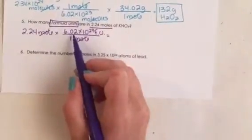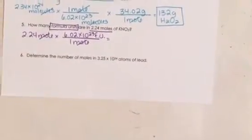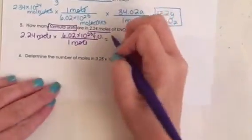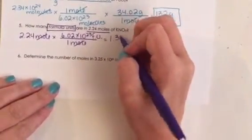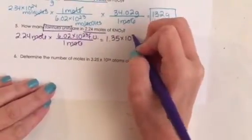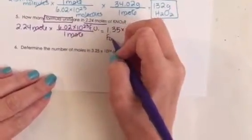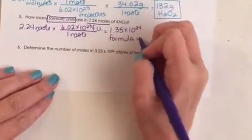We just multiply 2.24 by 6.02 times 10 to the 23rd, and in that sample, there would be 1.35 times 10 to the 24th formula units.